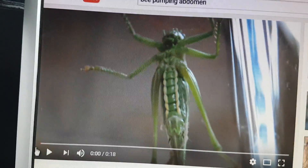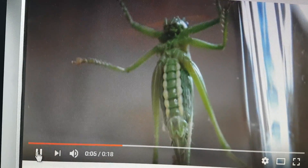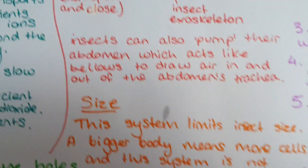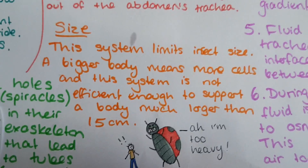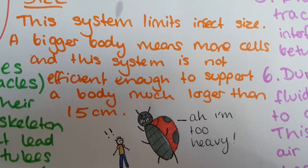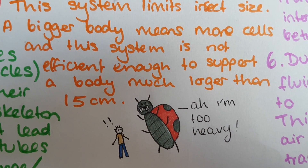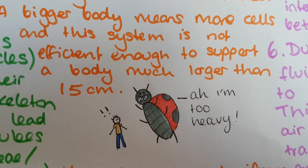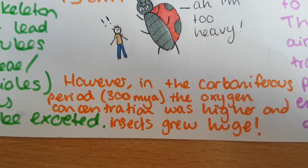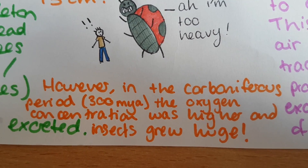Apart from simple diffusion, insects can also pump their abdomen like bellows to draw air in and out. Here's a grasshopper pumping its abdomen — you can see it very slightly moving its abdomen in and out, helping to squash and draw air in and out to aid gaseous exchange. This is quite a limited system. It means insects can't really get much bigger than 15 centimetres, because there are just too many cells to support. Their exoskeleton would also get too heavy and they'd need even more oxygen to move around. Back in the Carboniferous period, about 300 million years ago, oxygen concentration was a lot higher and you did get giant insects like dragonflies, but luckily they are quite small now because oxygen levels have dropped again.